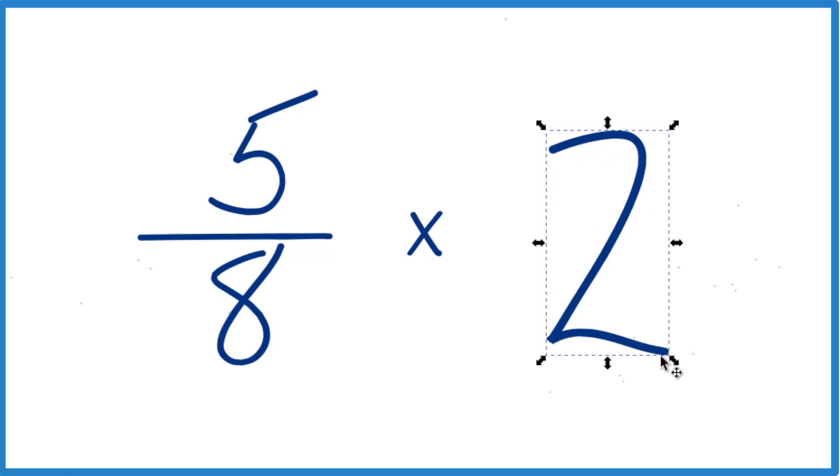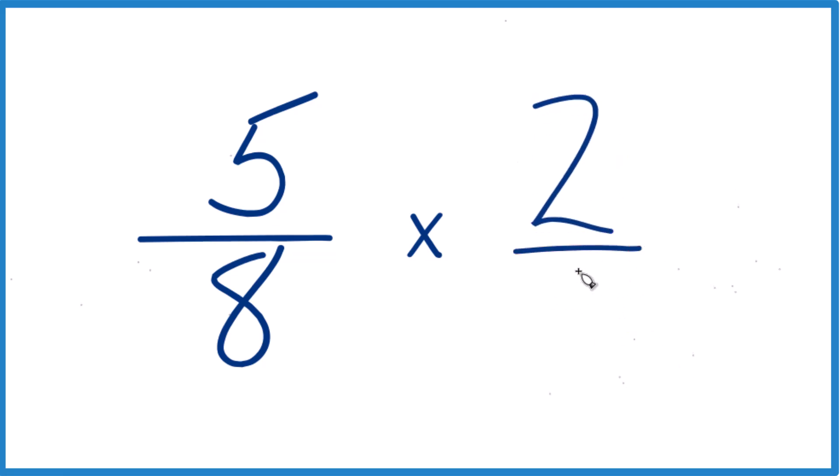Another way to do it is to take 2. Instead of 2, let's call this 2 over 1. 2 divided by 1, that's still 2, but everything lines up.